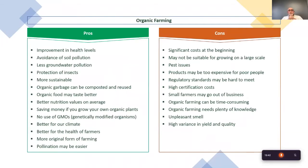On the pros side: improvement in health levels — many people believe eating organic food will make them healthier than non-organic. Avoiding soil pollution — if you're not applying herbicides and pesticides to soils, you avoid some pollution, though many pesticides do decompose rapidly in soils. Less groundwater pollution. Protection of insects — specifically beneficial insects that prey on pest insects — and avoidance of producing superbugs through excessive insecticide use, which eliminates susceptible bugs and leaves resistant ones. Organic farming is also considered more sustainable, requiring less input in some cases.